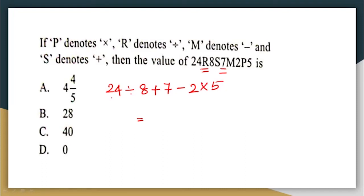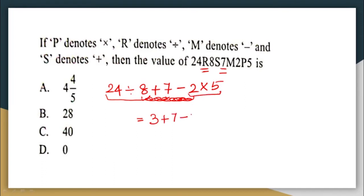Whenever you have questions involving divisions, multiplications, additions and subtractions, always do the divisions first followed by the multiplications, then additions and subtractions. Do not find 8 plus 7 first or 7 minus 2 first — you will make a mistake. So: 24 divided by 8 is 3. Then 2 multiplied by 5 is 10. So we have 3 plus 7 minus 10, which equals 10 minus 10 = 0. The answer is option D: 0.